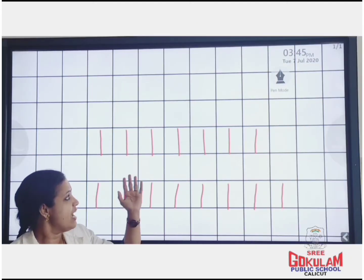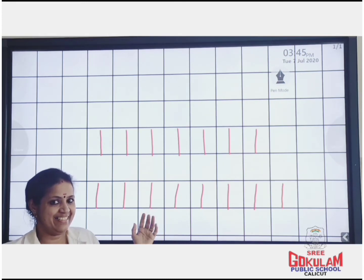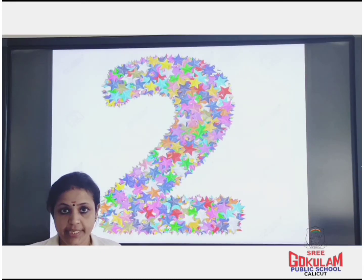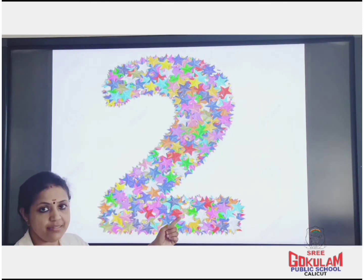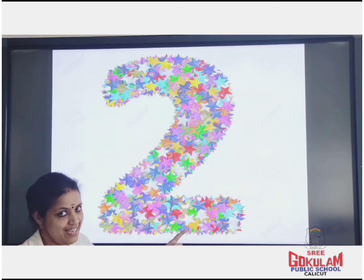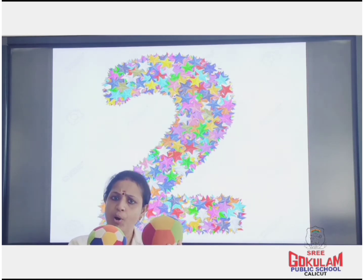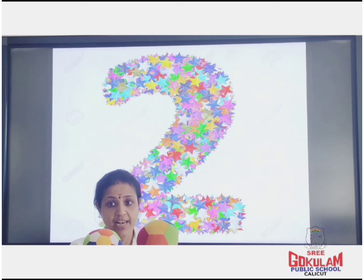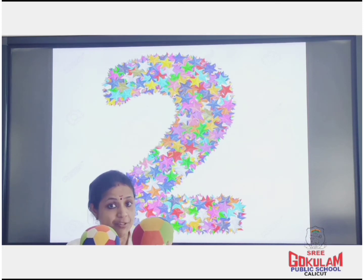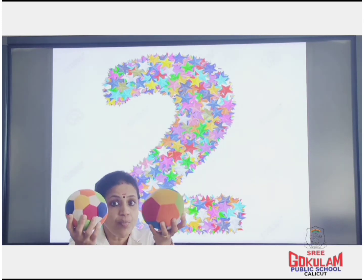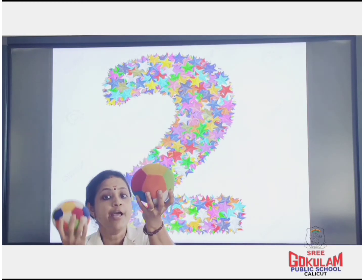Did you understand how to write number one? Next, we are going to learn number two. Which number? Number two. Look here — which number is this? Number two. Children, what are these? Balls. Do you like to play with balls? How many balls are there? One, two. Two balls.